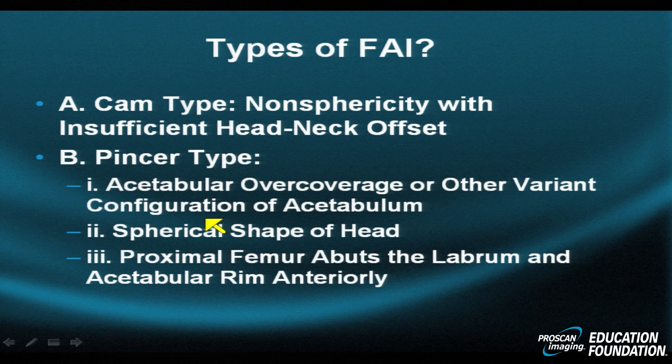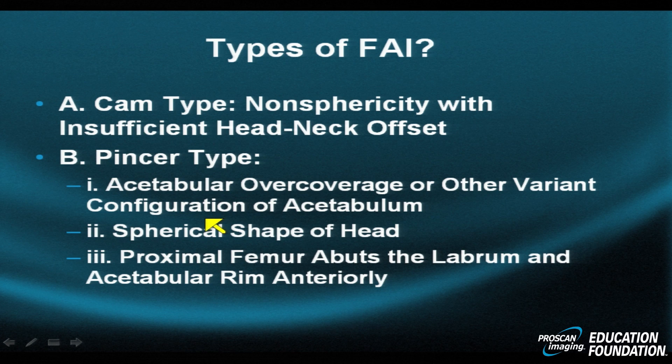The two major types of FAI include cam type impingement, so-called type A, in which there is loss of sphericity of the femoral head and an insufficiency of the head-neck relationship. In other words, the head should be a nice smooth spherical structure that tapers into a thin neck. When this transition is interrupted by a bump or a broad neck, the forces applied against the acetabulum are excessive in various positions.